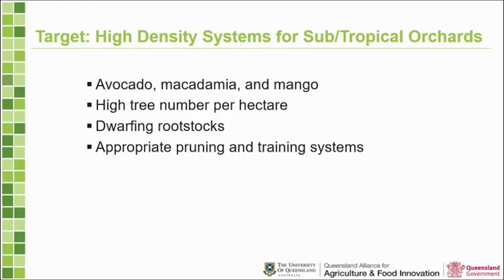We want to create the same kind of system for tropical and subtropical orchards. We've chosen to work on macadamia, avocado, and mango, with the idea of achieving high tree numbers per hectare. One concept from apple work is dwarfing rootstocks — grafting the plant onto a rootstock that controls vegetative growth and helps manage plant vigor. That's a long study to find, so we may or may not achieve it in this project, but it's one of the aims. Really what we're focused on is appropriate pruning and training systems.